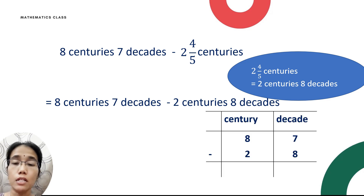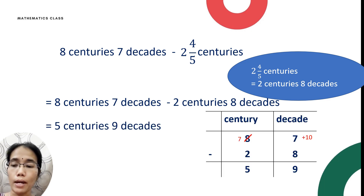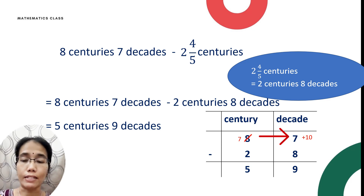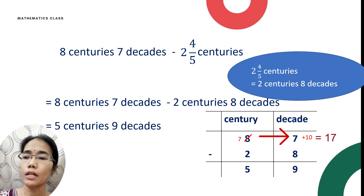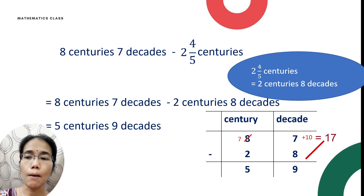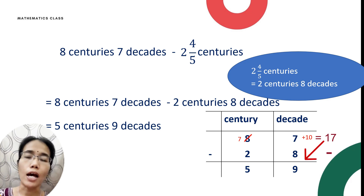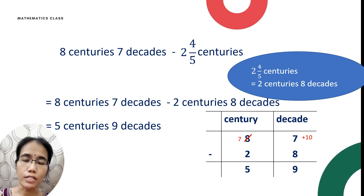You have seven minus eight — since you cannot subtract, take one century and give ten decades, so you will have 17 minus eight, giving nine decades. Then eight centuries minus two centuries gives five centuries. So your final answer will be five centuries and nine decades.